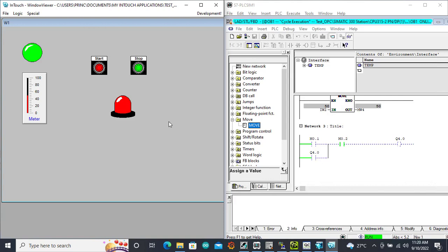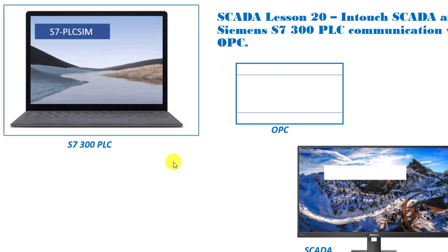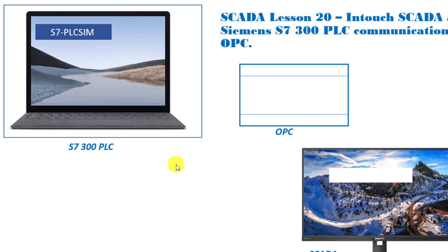Let's look at the software that we need to implement this. We have our setup here showing how our connection is going to be and the software we will need. First of all we will need the PLC Sim, because we'll be using the simulator. If you've not done the installation of the Step 7 software, you need to visit my Getting Started with Step 7 to do the installation, and then you need the PLC Sim software installed as well.